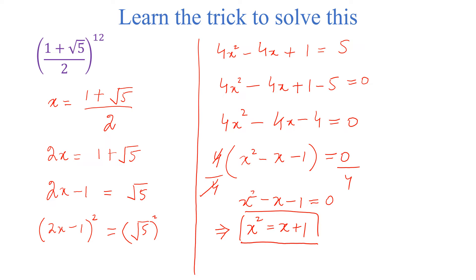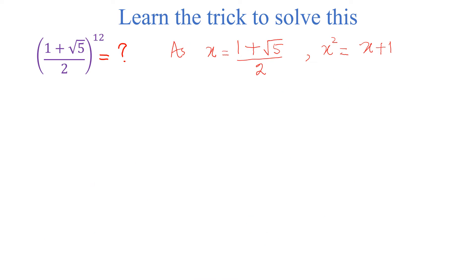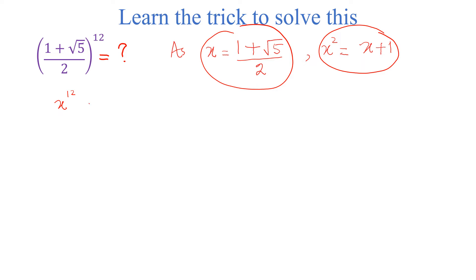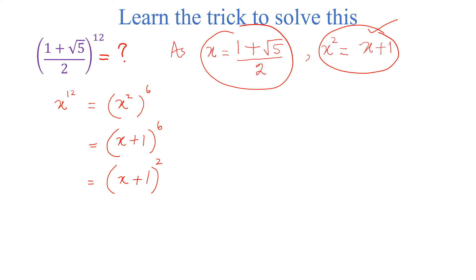Now we will use this to solve the problem. x is equal to 1 plus square root of 5 divided by 2, and x² is equal to x plus 1. We can write x^12 as (x²)^6. Now we know that x² is x plus 1, so this becomes (x plus 1)^6, which we can write as [(x plus 1)²]^3.